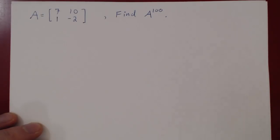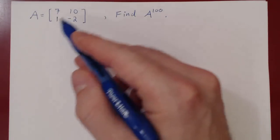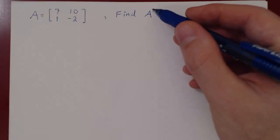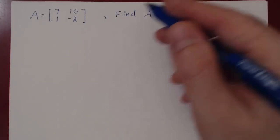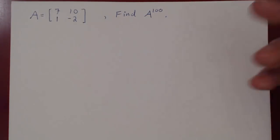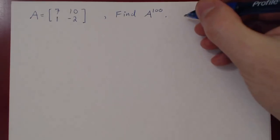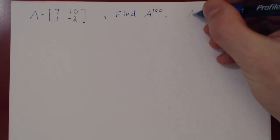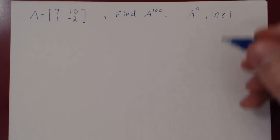In this video we'll consider an explicit example of eigenvalues and eigenvectors. Suppose you were given the 2 by 2 matrix [7, 10; 1, -2], and I ask you to find A to the hundredth power. What you'd have to do directly is multiply A times itself a hundred times. With the help of eigenvalues and eigenvectors, we'll find not only the hundredth power of A, but A to the n for any positive power n.